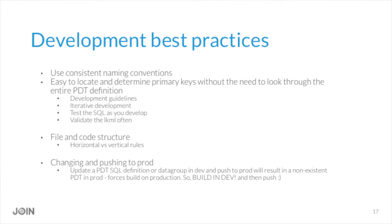Changing and pushing to production is important to get right. If you can build your table in development mode, do it there. When you make changes to the code — whether it's a data group change or a change to the SQL — Looker recognizes that as a completely new table and will force a build when that code hits production. However, if you build it in development mode first, when you push that code it will promote the table that was built in dev mode.